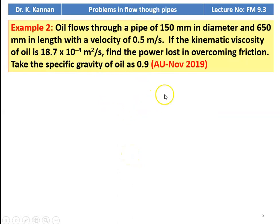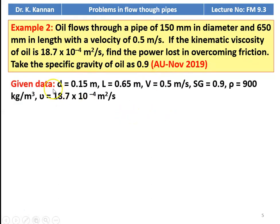Example number 2 from the November 2019 question paper: oil flows through a pipe of 150 mm diameter and 650 mm length with a velocity of 0.5 m/s. The kinematic viscosity of oil is 18.7 × 10⁻⁴ m²/s. Find the power lost in overcoming friction. The specific gravity of oil is 0.9, giving a density of 900 kg/m³.